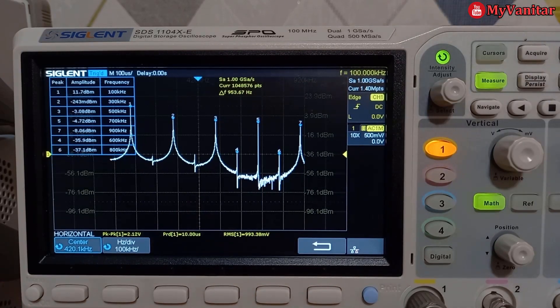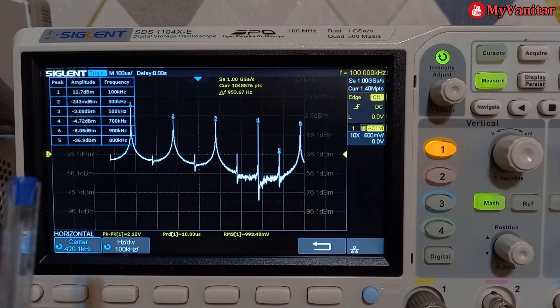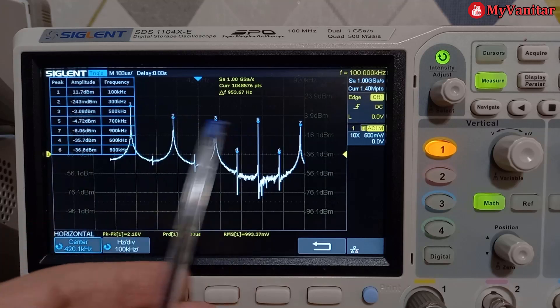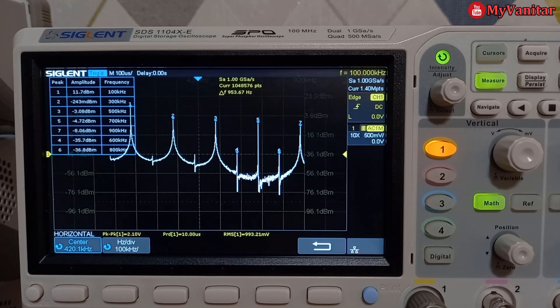So everything is in front of our eyes. The main frequency, sorted by amplitude. These are the harmonics. So that's it, we're done with our experiment.